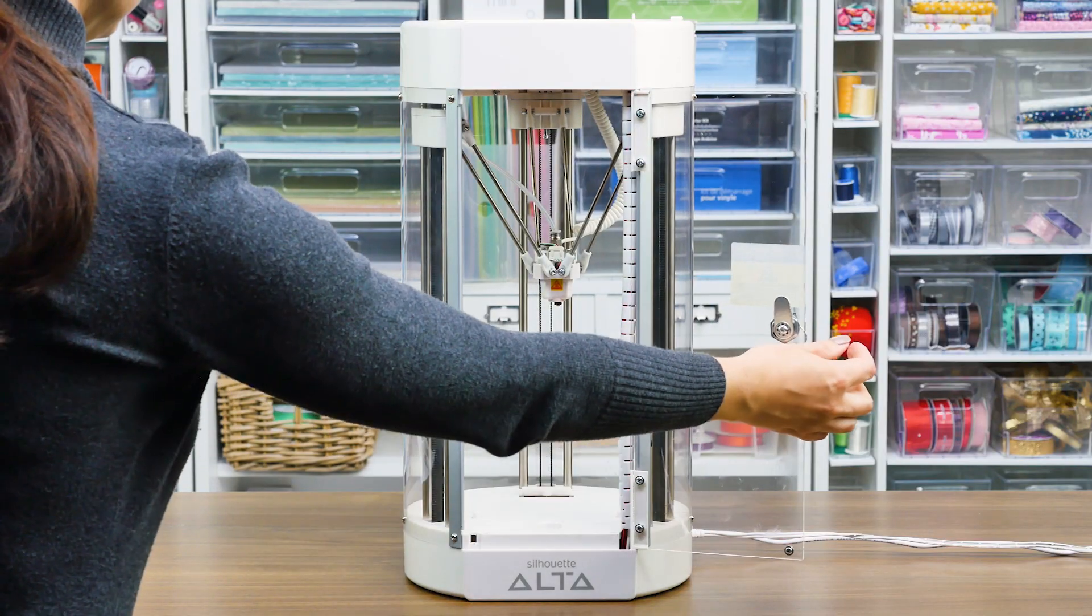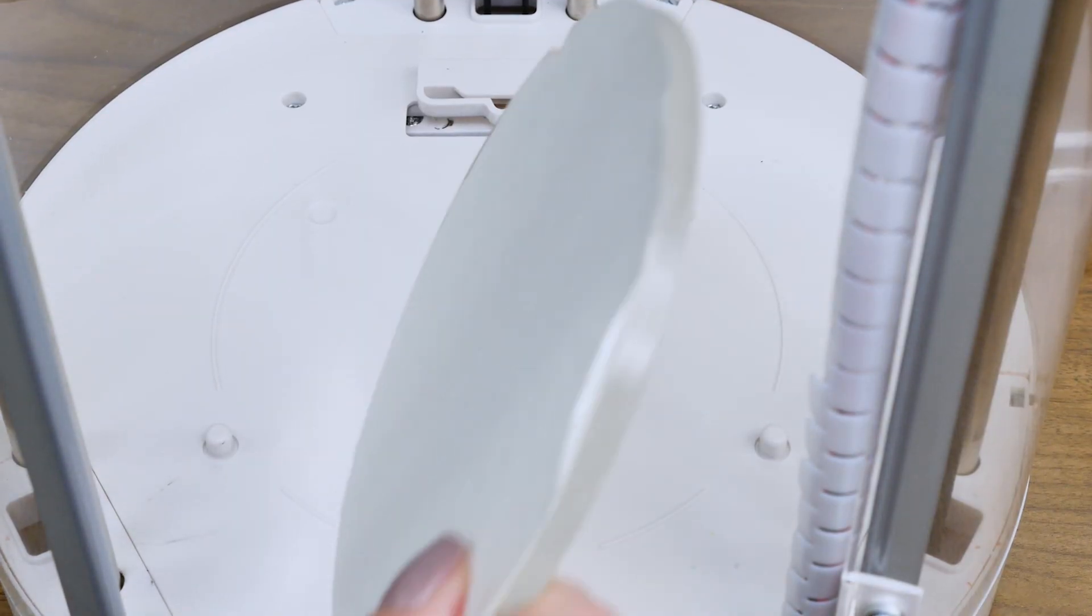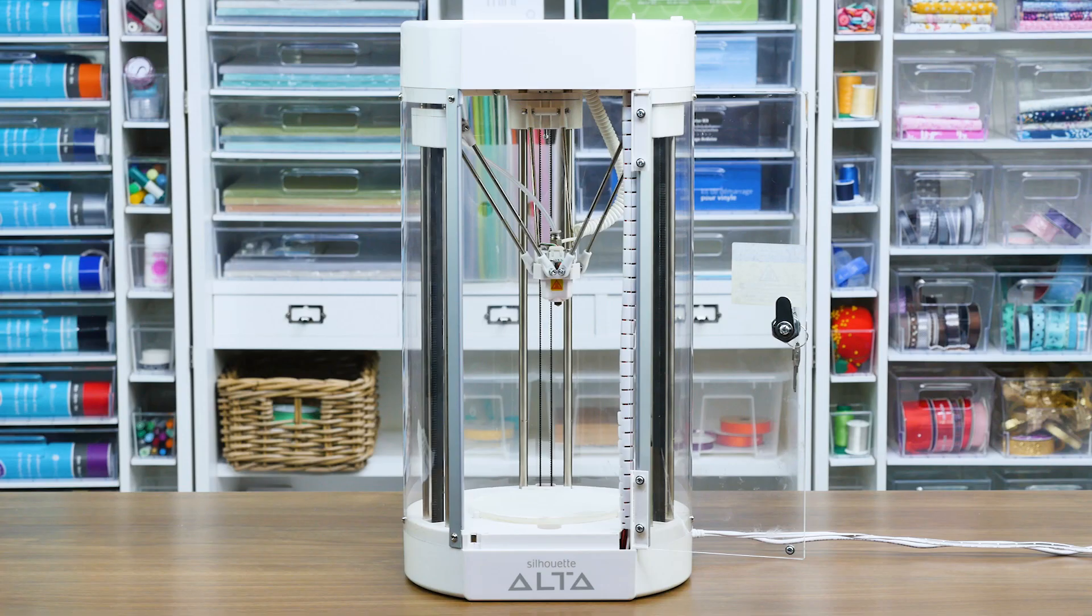After the tape is adhered, place the platform piece under the print nozzle with the tape side facing up. Make sure the notch of the platform lines up with the notch at the bottom of the machine.